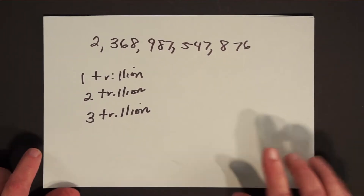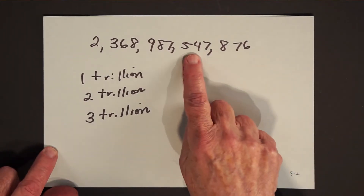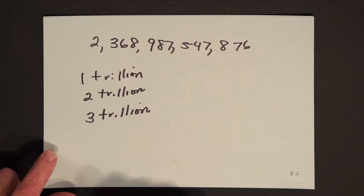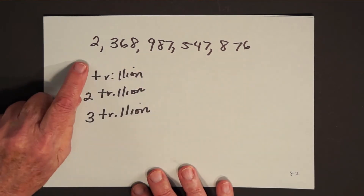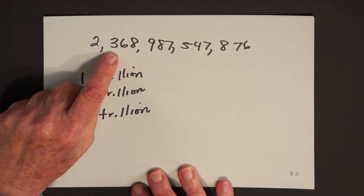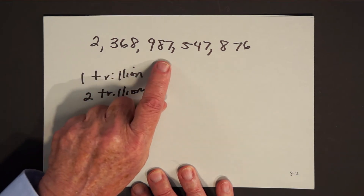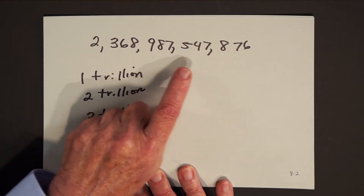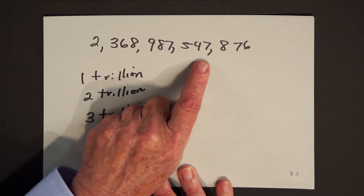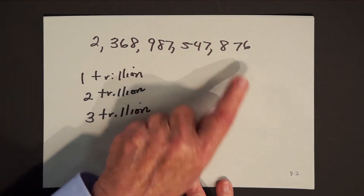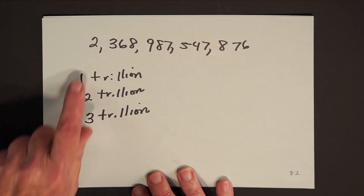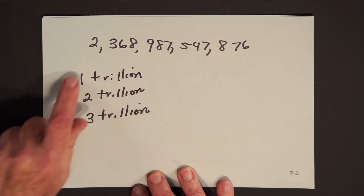Here's a pretty big number. Units, thousands, millions, billions, trillions — two trillion, 368 billion, 987 million, 547,876. That's a pretty big number.